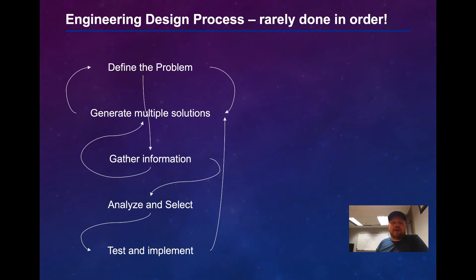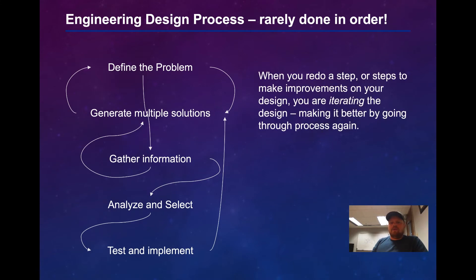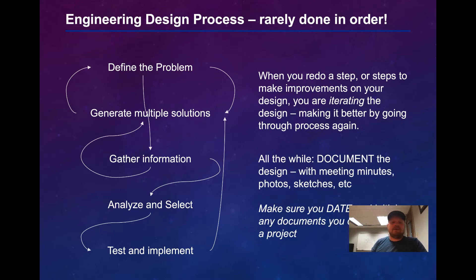In a more graphical way, we can show the design process with those five steps, with many arrows drawn to demonstrate that typically there is iteration — almost every step is used in different parts of the process, and these things are rarely done in order. When you redo a step, you're making improvements to the design — this is what we call iterating. While doing this, we're documenting: meeting minutes, photos, sketches, making sure we know what decisions were made and why.